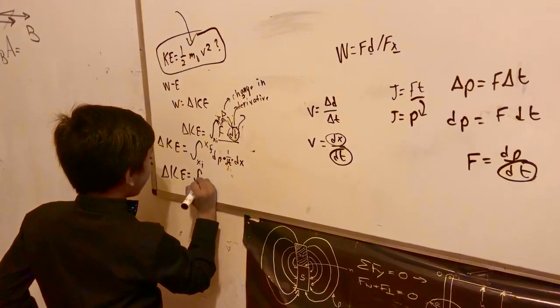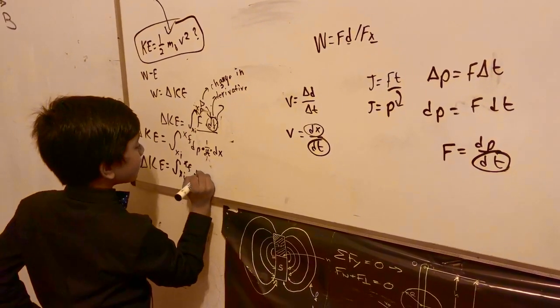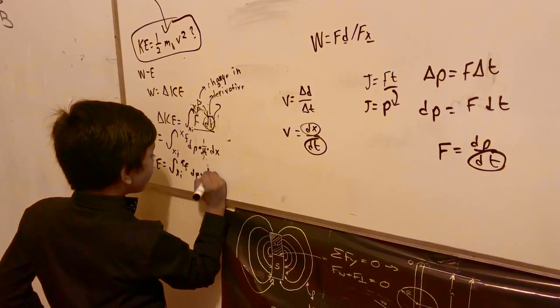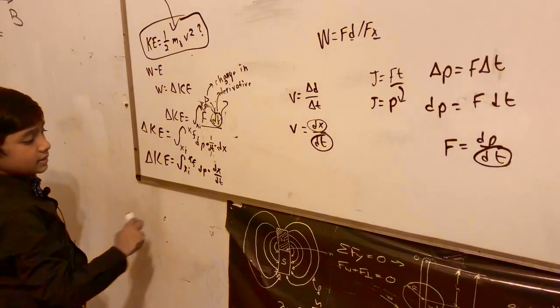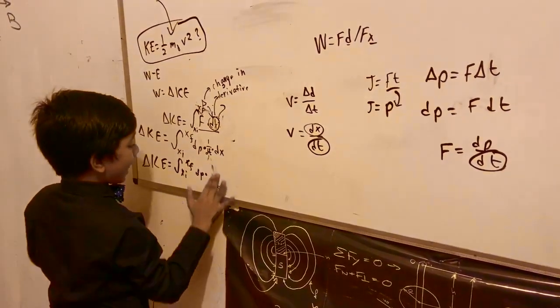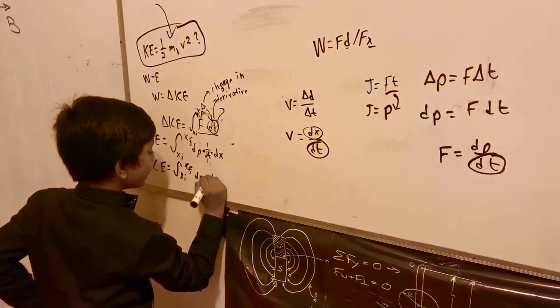So delta KE is from xi to xf, dp times dx over dt. And I think you recognize this. We can actually simplify this and make it dv.